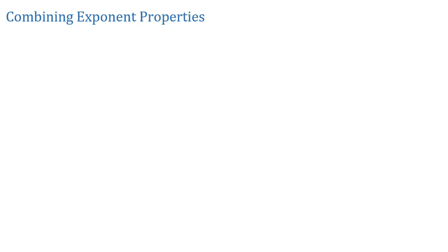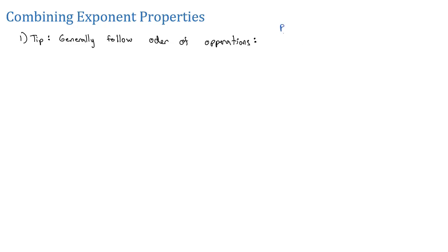Now that we've taken a look at exponent properties individually, let's look at how they can be combined together. To do that, I have a tip to consider: we will generally follow order of operations. So we're going to want to simplify anything in parentheses, any exponents outside of parentheses that need to go into factors, anything that's multiplied and divided together, and then finally any adding or subtraction of like terms.